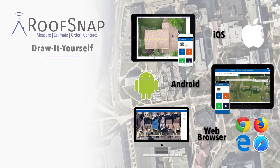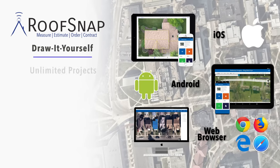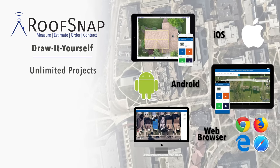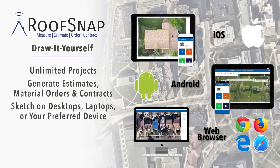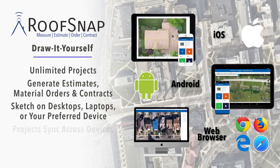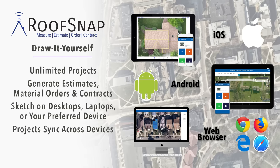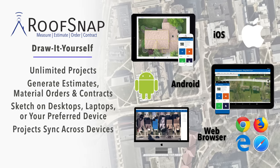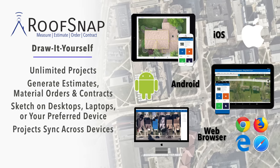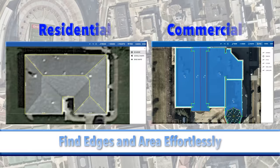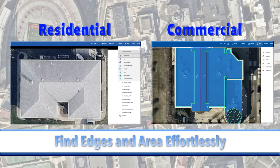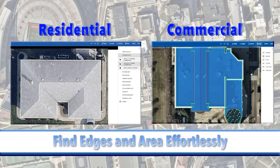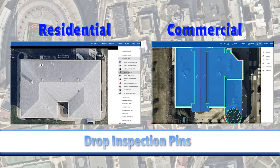If you prefer to draw the roof yourself, RoofSnap allows you to create your own sketches and measurements on your preferred device — iOS, Android, and now on the web. Whether you're measuring a commercial or residential property, RoofSnap makes measuring the area and edges quick and easy.